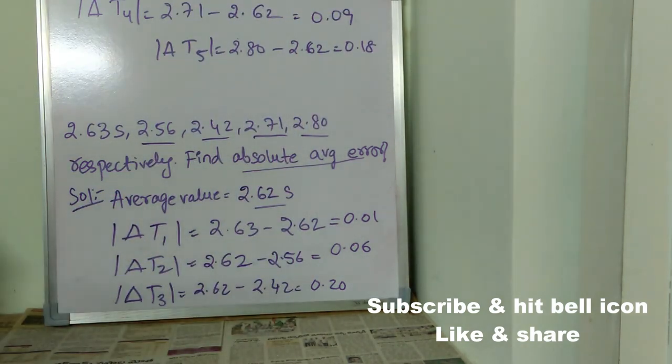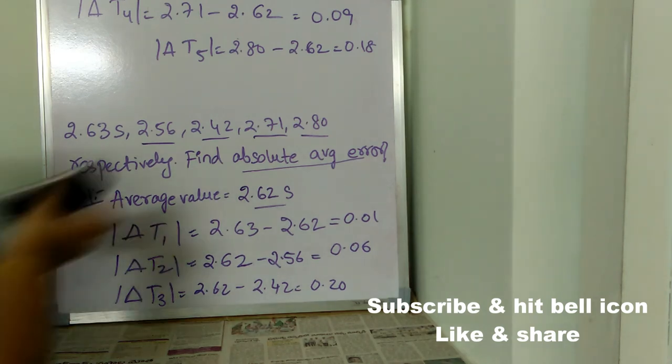So, now, we found all the values from delta T1 to delta T5. Now, we need to find the average of newly found values. So, now, let's see how.